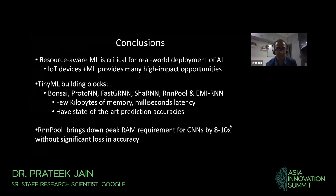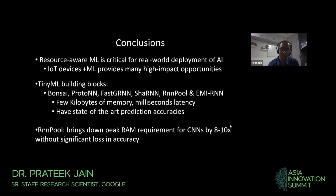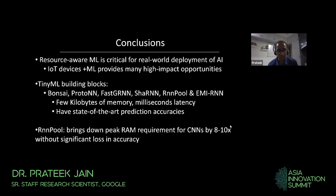In summary, resource-aware machine learning is really critical for deploying artificial intelligence in the real world. In particular, the IoT domain provides several high-impact opportunities. The approach we have taken is to come up with new building blocks that can be deployed on tiny devices while ensuring good model performance. Of late, we have come up with a new technique called RNN Pool, which we're very excited about because it is able to bring down peak RAM requirements for convolutional networks by 8 to 10x without a significant loss in accuracy. That's all I have — thank you so much.